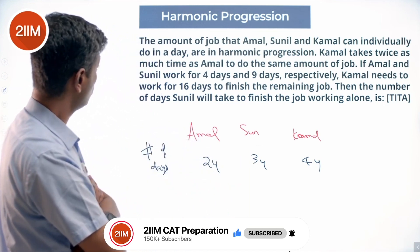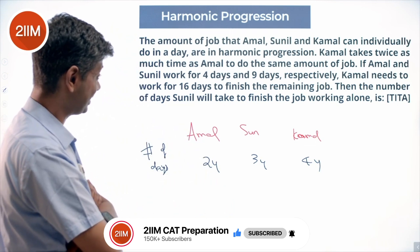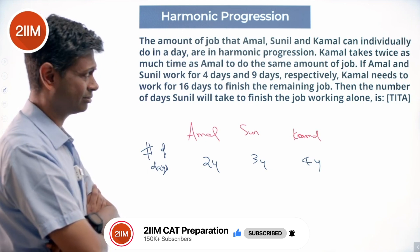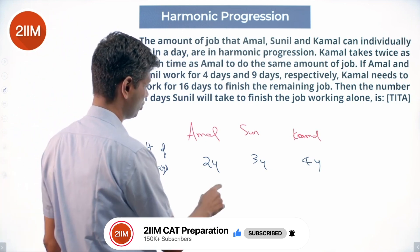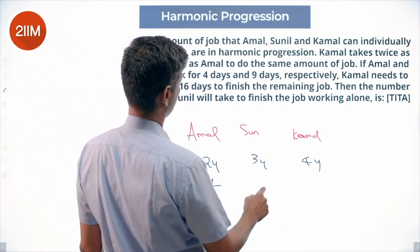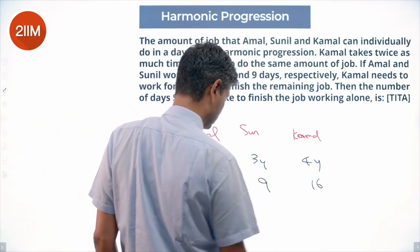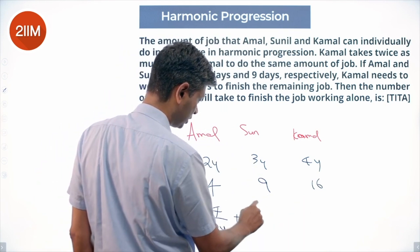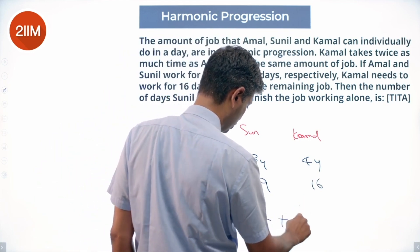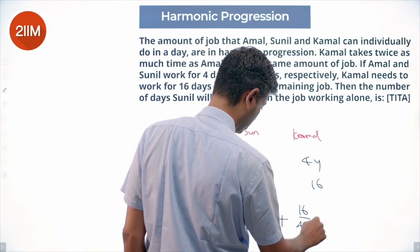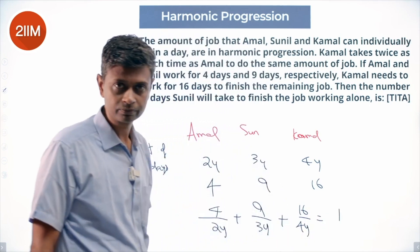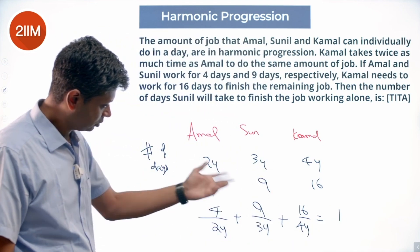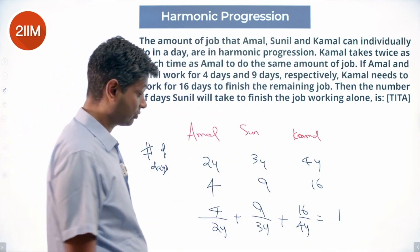If Amal and Sunil work for 4 days and 9 days respectively, Kamal needs to work for 16 days to finish the task together. The total amount of work done is 4/2y plus 9/3y plus 16/4y. Simplifying: 4/2y is 2/y, 9/3y is 3/y, and 16/4y is 4/y, giving 2/y plus 3/y plus 4/y.